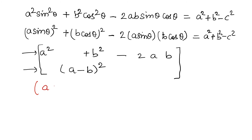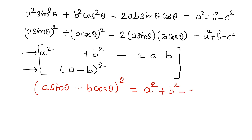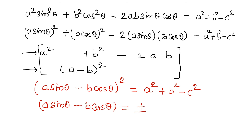So (a sinθ − b cosθ)² is equal to a² plus b² minus c². Therefore, a sinθ minus b cosθ — which is exactly what was asked in the problem — is equal to plus or minus the square root of a² plus b² minus c².